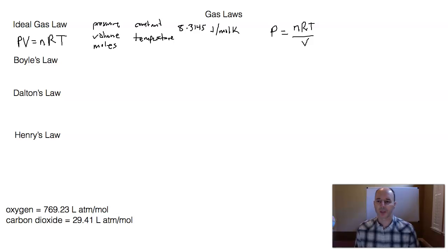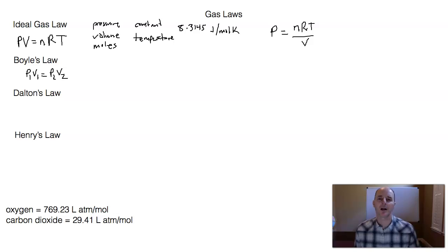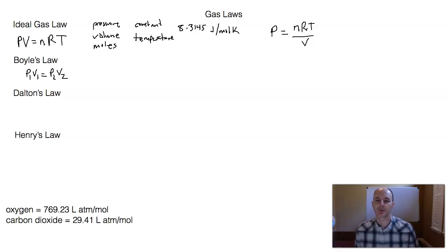So in physiology, we take a look at Boyle's law, and Boyle's law is P1V1 equals P2V2. What Boyle's law allows us to take a look at is what happens to pressure when you change the volume. It turns out that pressure and volume have an inverse relationship. So if you were to increase the volume, you would see a decrease in pressure, and if you were to decrease the volume, you would see an increase in pressure.